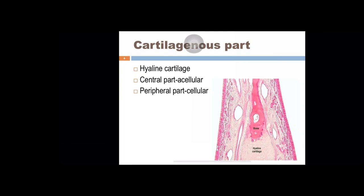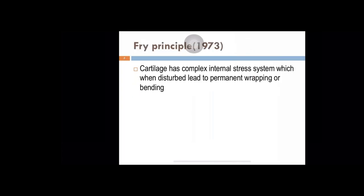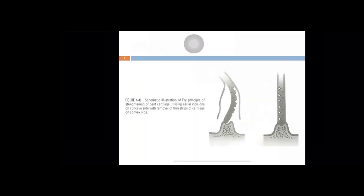The cartilaginous part is wedged between the perpendicular plate of ethmoid and the vomer. The cartilaginous part is a hyaline cartilage — the central part is acellular, whereas the peripheral part is cellular. The important thing about this septum is it has a memory. It has a complex internal stress system which keeps it intact. When it is disturbed, it leads to permanent warping or bending. It undergoes permanent change of shape when there is a disturbance. This is Frey's principle.